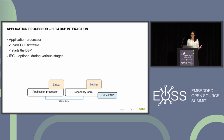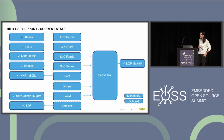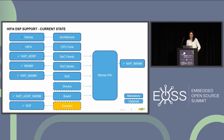The HiFi 4 DSP is from Xtensa — it's not ARM architecture, it's Xtensa. For the current support, this was added a few years back. The architecture part and CPU core was already there. We added the SoC support and also our board: the NXP i.MX 8 DSP iMX 8M. We also added support for SoundOpen Firmware, which was the main goal.